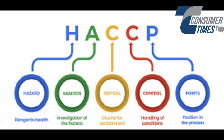Examples of biological hazards include Salmonella, E. coli, and Listeria. Chemical hazards include cleaning agents, pesticides, heavy metals, food allergens, and harmful additives. Even natural toxins, such as those found in certain plants, are considered chemical hazards.